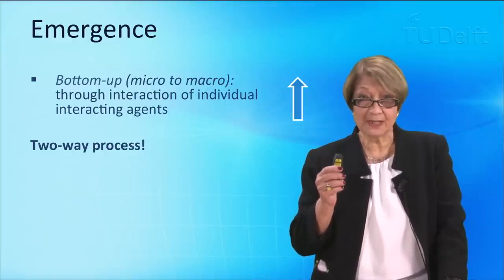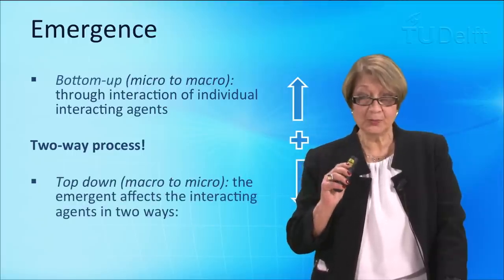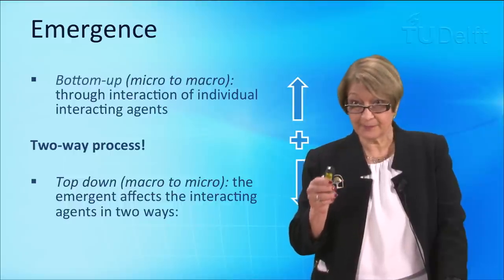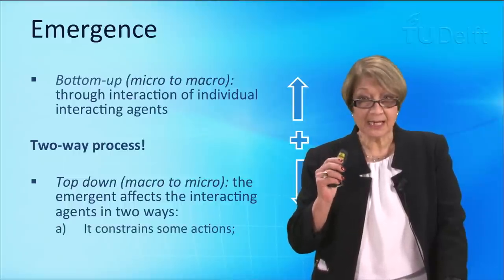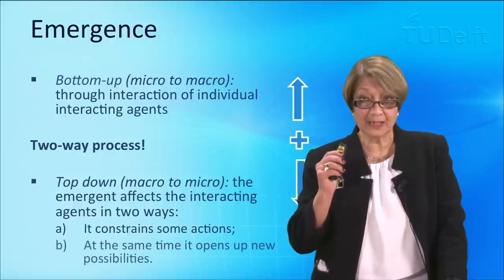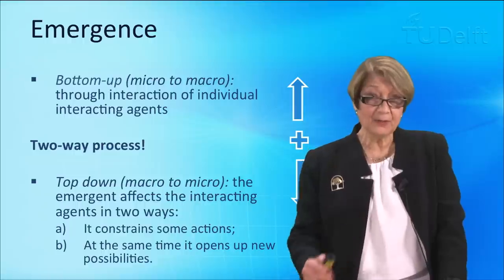Research on the brain has actually shown us a second process. And the second process says that once the emergent comes into being, there are two things that happen. It affects the agents in two ways. It can both constrain certain behaviours while at the same time it can open up new possibilities. Let me give you an example.